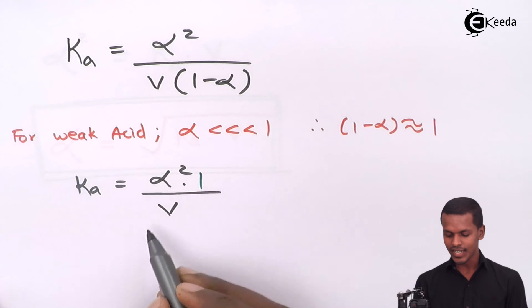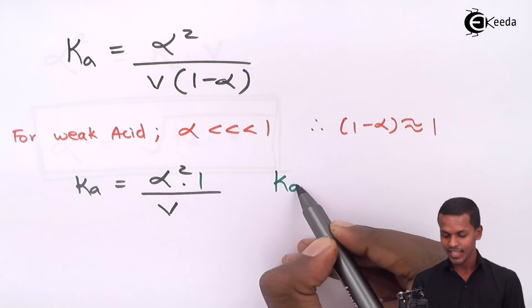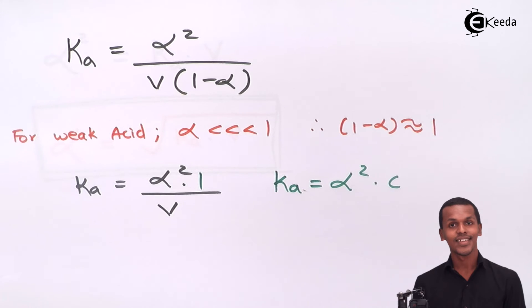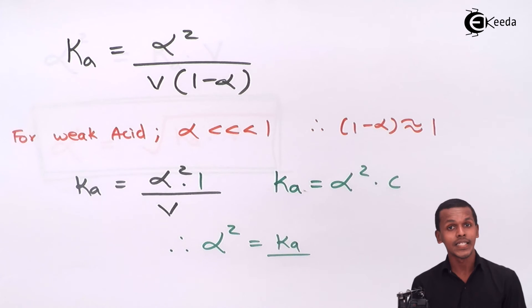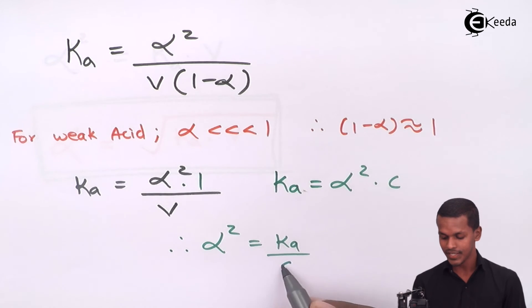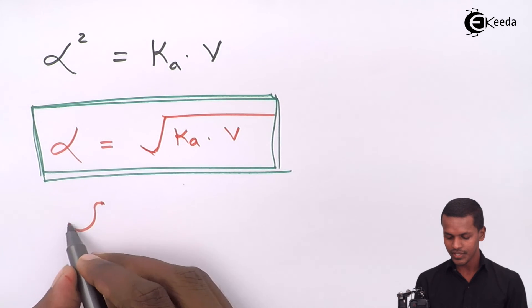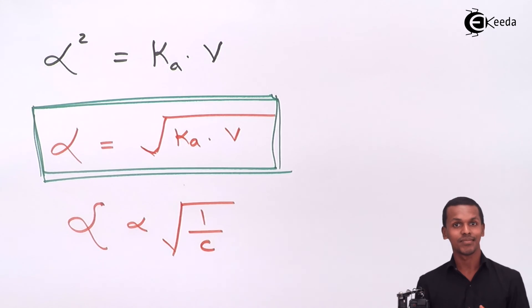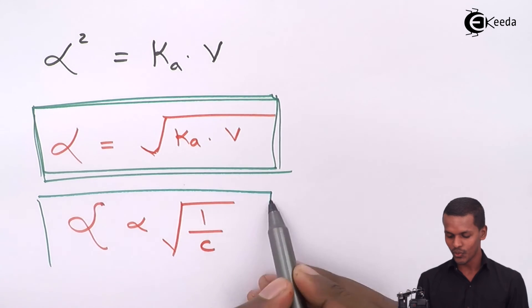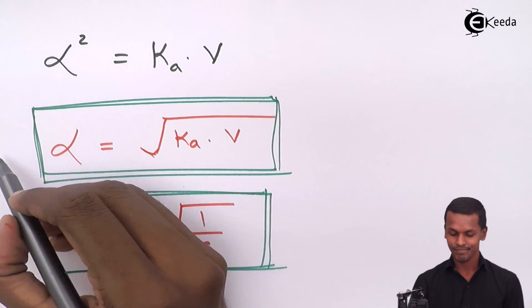We can also write this expression as Ka = alpha² × C, since 1/V is nothing but the concentration C. Therefore alpha² = Ka/C, and so the degree of dissociation alpha equals the square root of Ka divided by C. This shows that alpha is inversely proportional to the square root of the concentration of the solution. This completes the derivation of Ostwald's dilution law for the weak acid.